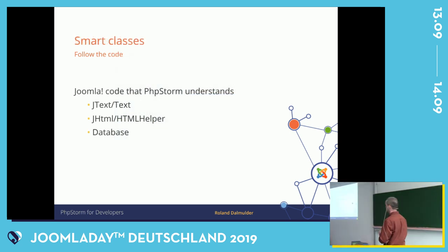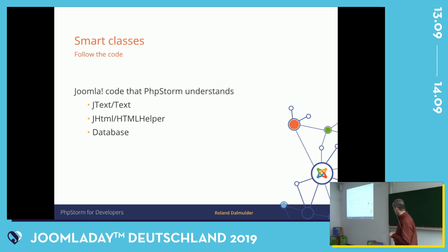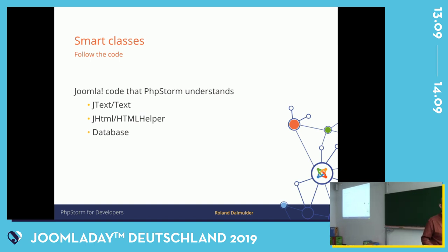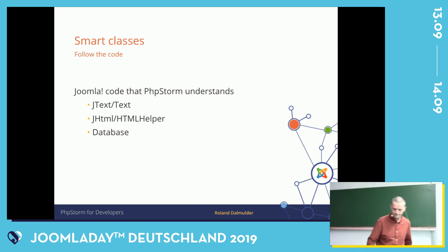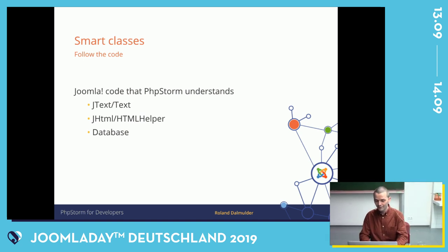Another feature PHPStorm provides is what I call smart classes. I'm using both the Joomla 3 and the new namespace names — JText which is now Text, and JHTML which is now HTMLHelper — plus the database, which I'll get to after. With Text and HTMLHelper, I'll give a short demonstration to show what PHPStorm can do for us.